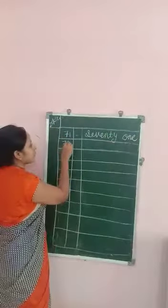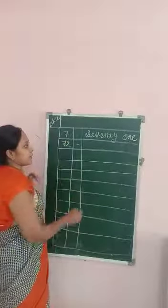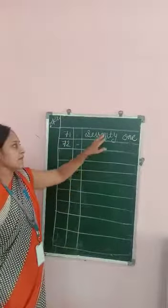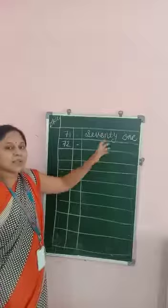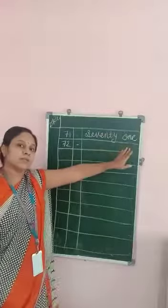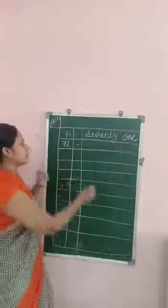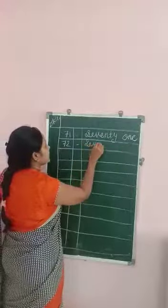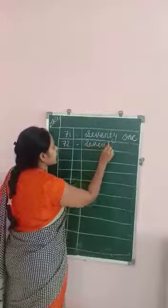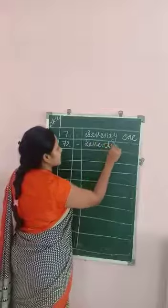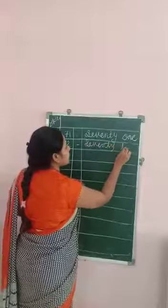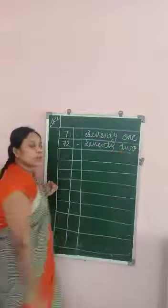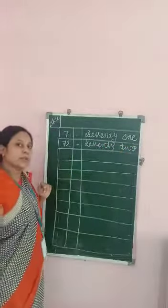7, 2 — 72. Again, we write 70 spelling and T, W, O — 2. S, E, V, E, N, T, Y — 70. T, W, O — 72.